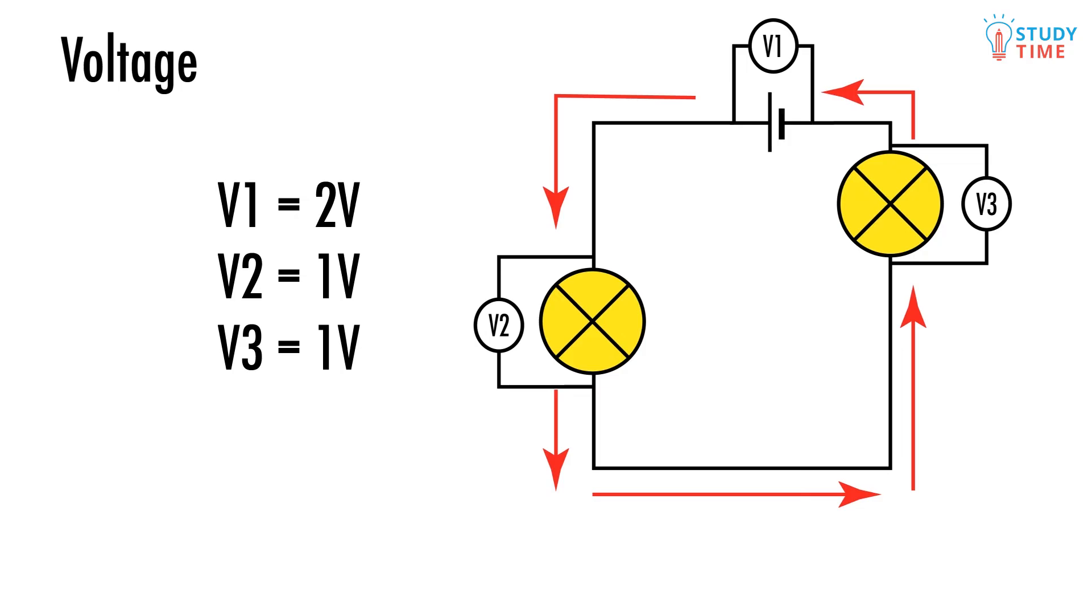Well that's rather odd isn't it? Back when we looked at current we saw how the current was the same at every point in the circuit. Now though it seems like voltage in the two bulbs is going to add up to the voltage of the battery. Could this possibly be right? Well the brief answer is yes.